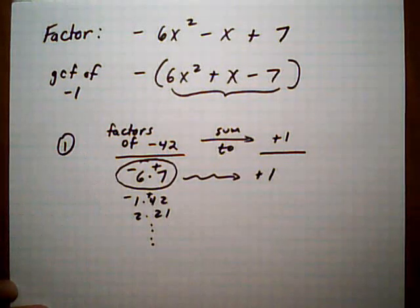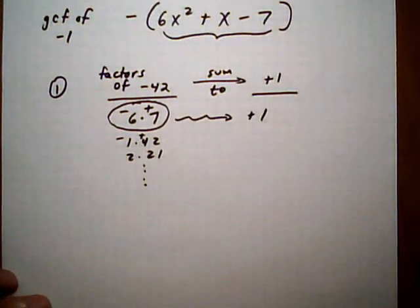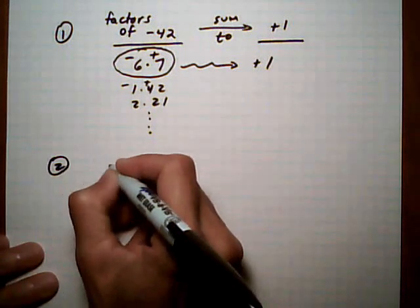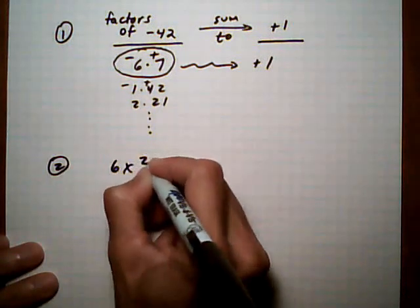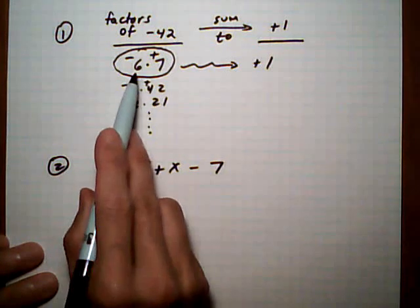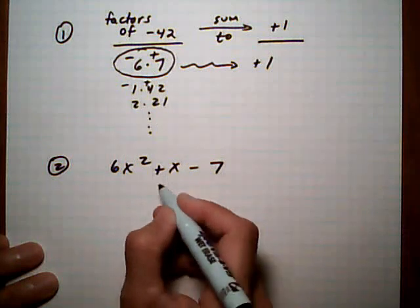So that's the first step in factoring a trinomial by grouping. The next step is to take our trinomial that we started with, 6x squared plus x take away 7, and use these two factors we just found to break up the middle term.